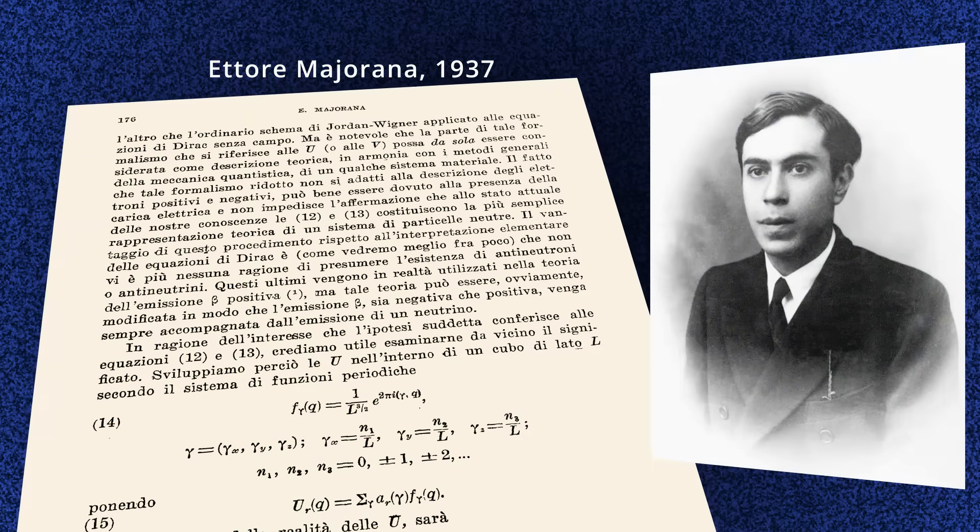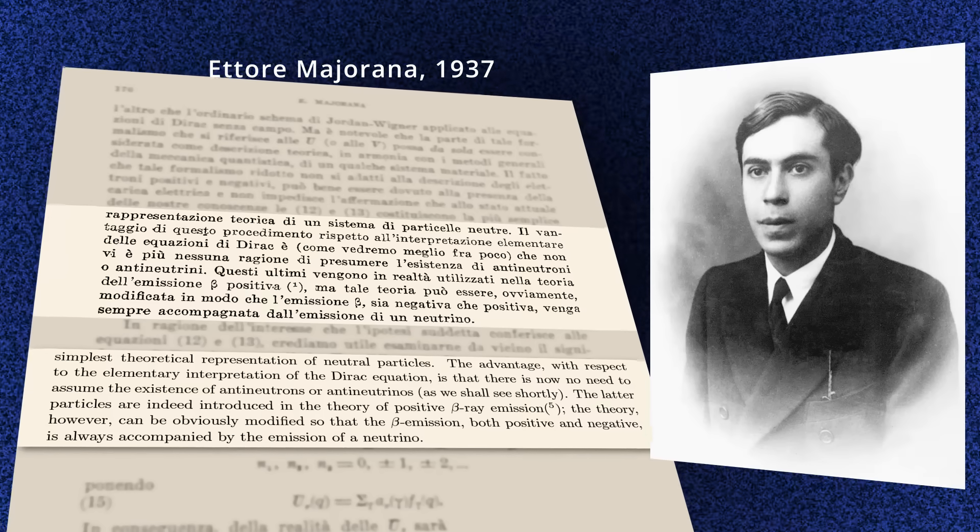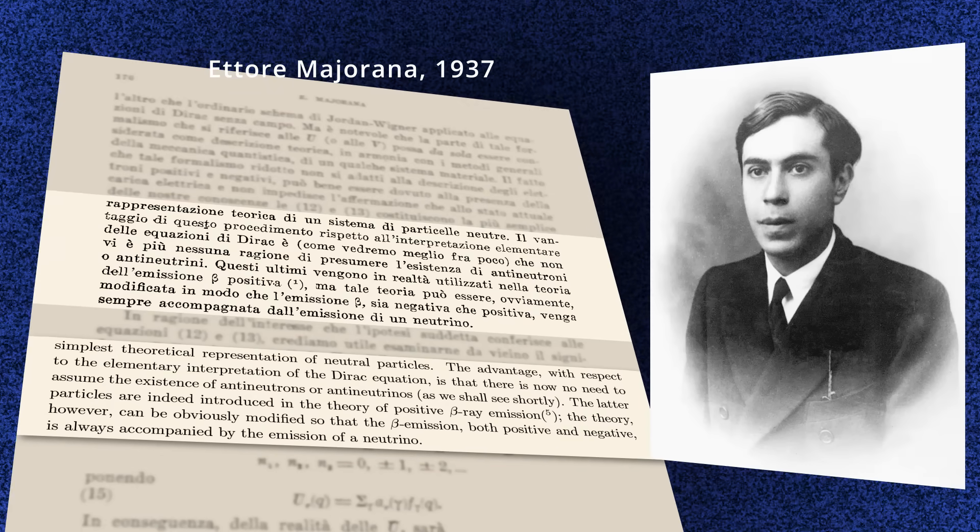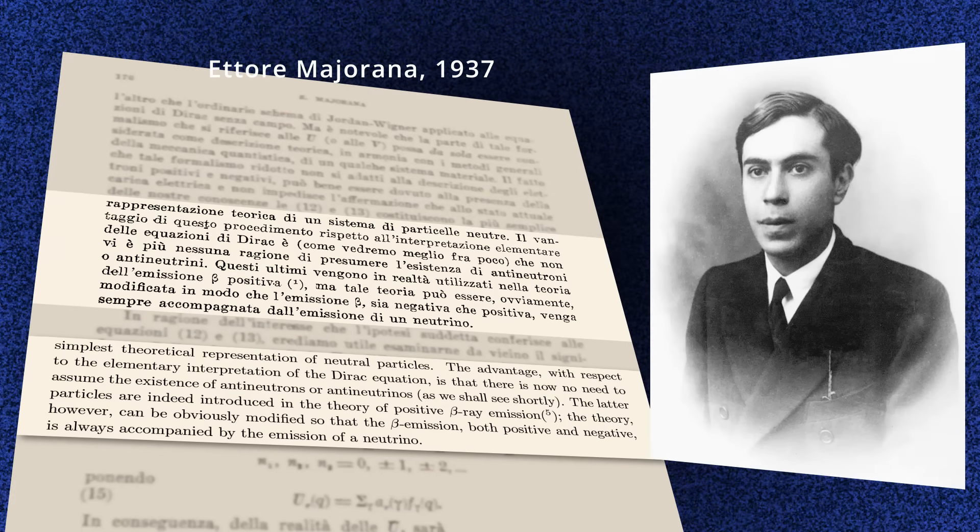In 1937, Ettore Majorana demonstrated that all results of beta decay theory remain unchanged if the neutrino were its own antiparticle.